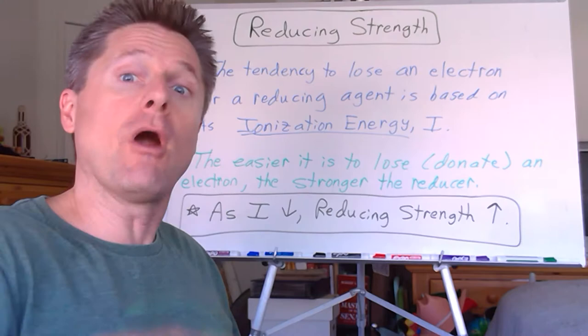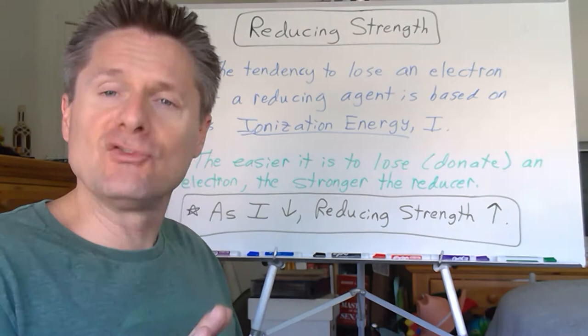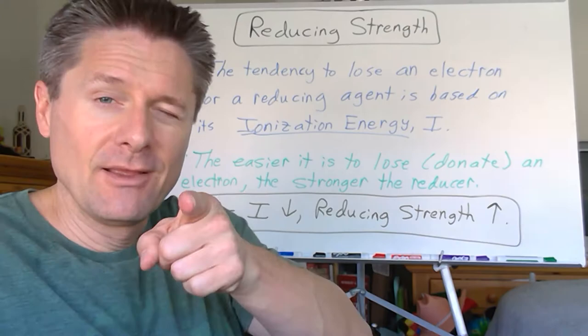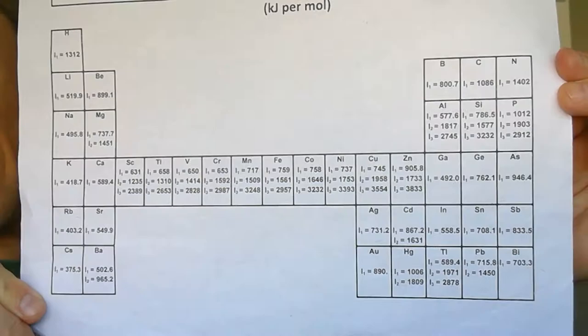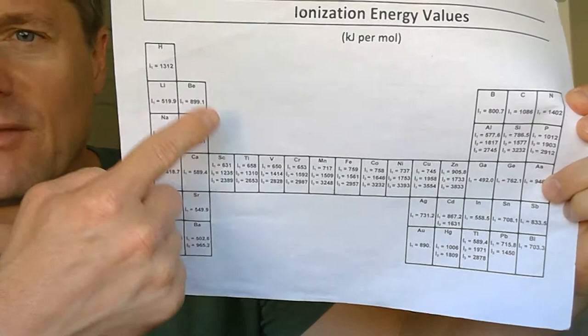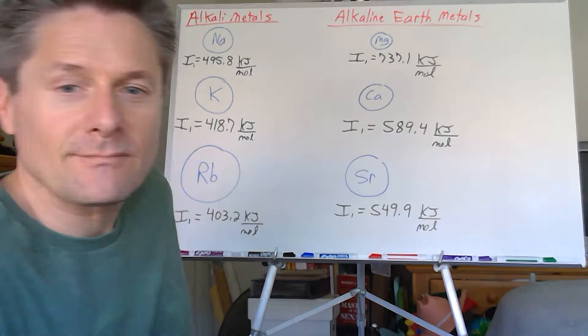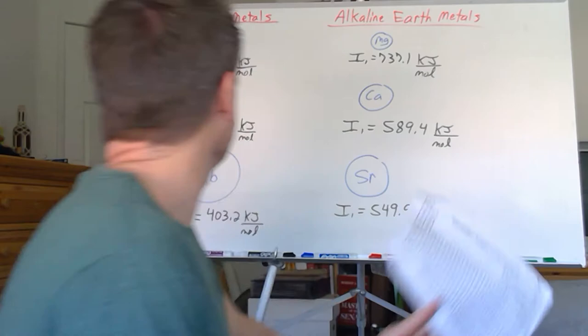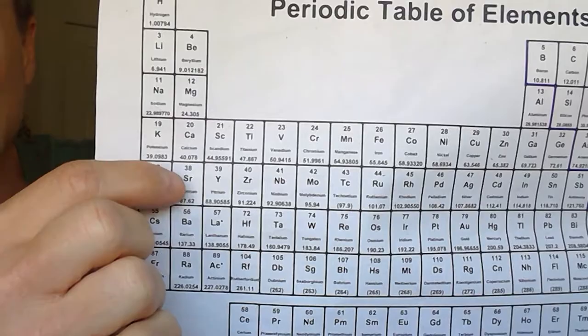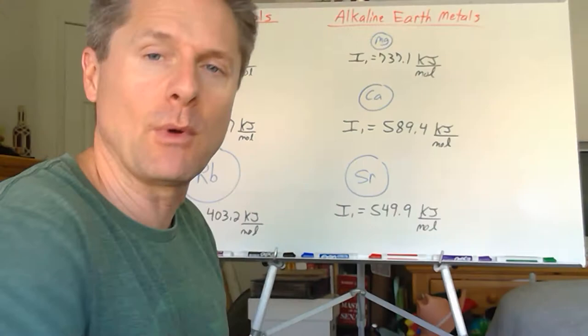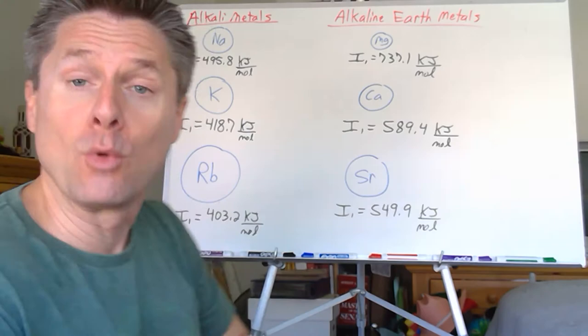So we need to look at the trends of ionization energy, which are opposite to atomic size, and we should be able to track the reducing strength of species on the periodic table. Grab your ionization energy chart. We're going to focus on the metals here. I just put a couple of trends on the board — sodium to rubidium — so sodium, potassium, rubidium, magnesium, calcium, strontium — just this block of the periodic table. We should see this trend pretty complete across the table.